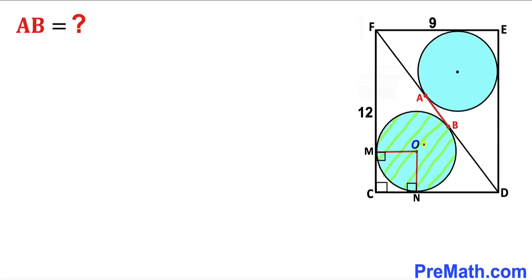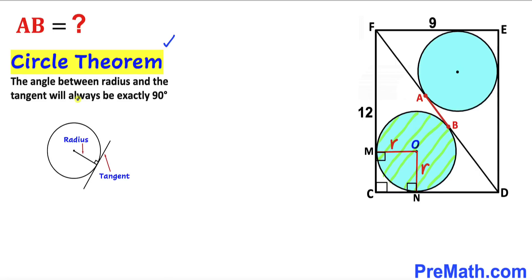We connect center O with the points of tangency N and M. We can see that ON is the radius of this circle — let's label it lowercase r. Likewise, OM is the radius as well, also labeled r. Recalling the circle theorem: the angle between a radius and a tangent is always exactly 90 degrees. In our case, CD and FC are the tangent lines.